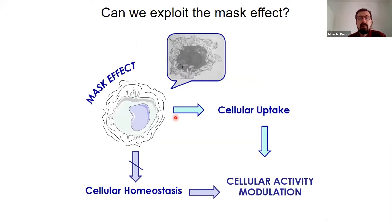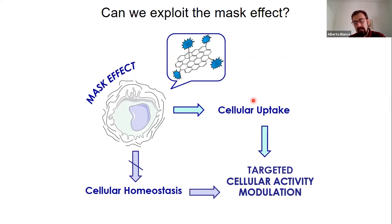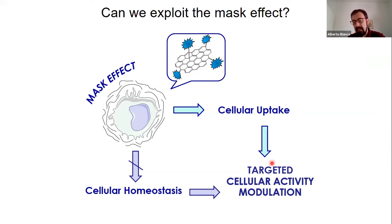How can we exploit the mask effect? We can modulate cellular homeostasis and impact cellular activity. At the same time, the cellular uptake can be exploited to modulate the cell in different ways. We can also make the system target specific cells — not necessarily macrophages. If you modify graphene oxide with a targeting ligand, you can target other cell types and use the material for different applications, including anti-cancer therapy.